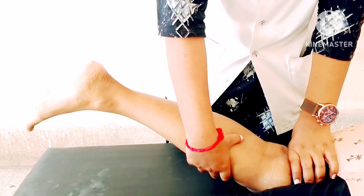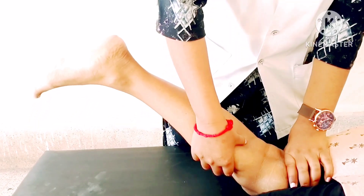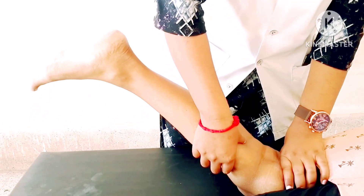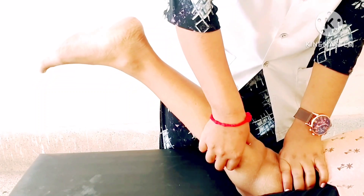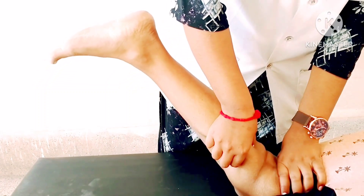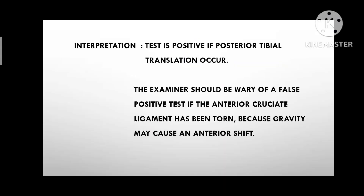The examiner then pulls the tibia up posteriorly, noting the amount of movement and quality of the end feel. Interpretation: the test is positive if posterior tibial translation occurs. The examiner should be wary of a false positive test if the anterior cruciate ligament has been torn, because gravity may cause an anterior shift.